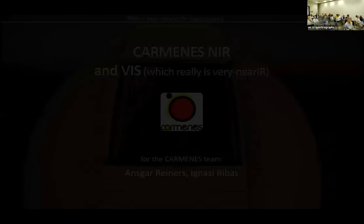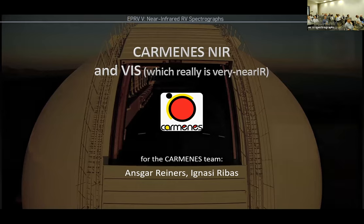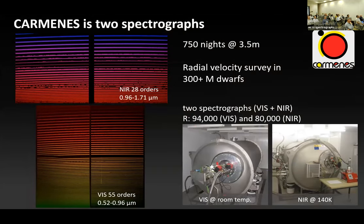I'm going to talk about CARMENES. We already heard the talk by Andreas and learned all the lessons. Ignacio and I will swap positions. We came up with two or three points to make. CARMENES is really two spectrographs — we built this setup more than 10 years ago, around 2011 for the first real meeting. It's a visual room-temperature spectrograph and a near-IR spectrograph, supposed to have no gaps in between, with a dichroic of course.